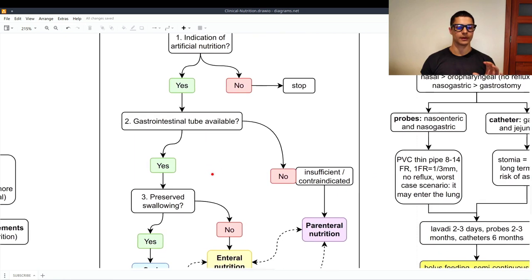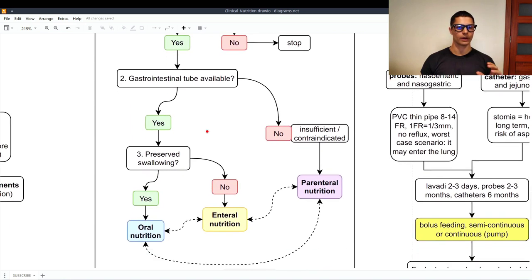On the other hand if the gastrointestinal tube is available we ask is the swallowing preserved? No. We cannot swallow correctly. We have dysphagia for example. Then we go to the enteral nutrition. Preserved swallowing? Yes. Then oral nutrition.